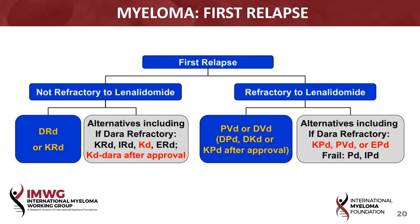The type of relapse and the biology of their relapse will influence any of those combinations on slide 20. You made a number of very important points — patient preference, and particularly the use of a triplet versus a doublet.